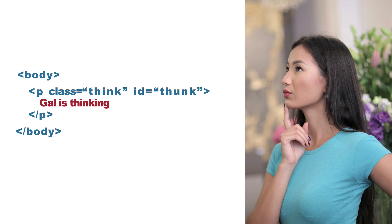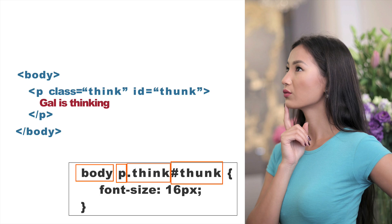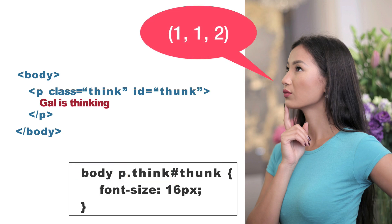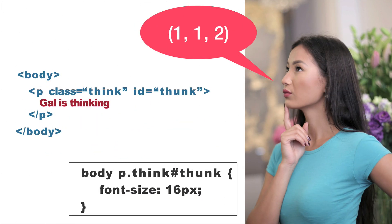In one more example, we have the same HTML except we've added an ID of thunk. Our selector is body p .think #thunk. So: body and p are elements — two elements; think is a class — one class; and thunk is an ID — one ID. That gives us 1 in the ID column, 1 in the class column, and 2 in the element column: 1, 1, 2. This style declaration is more specific than the previous one, so it would win out.